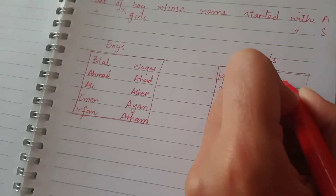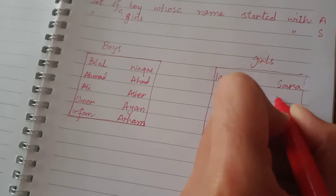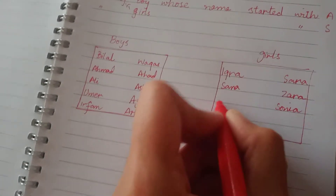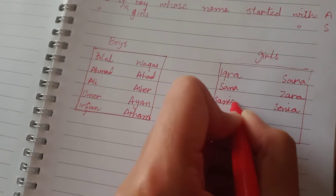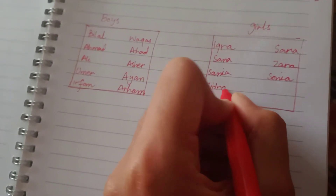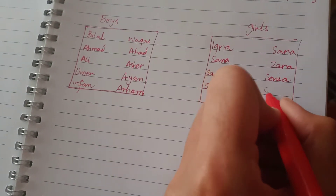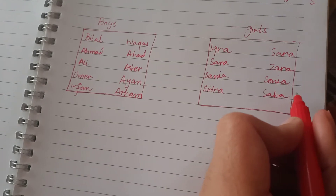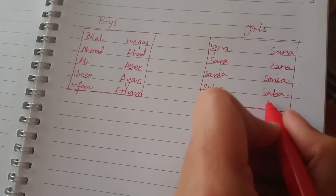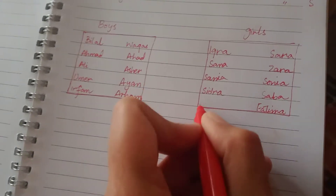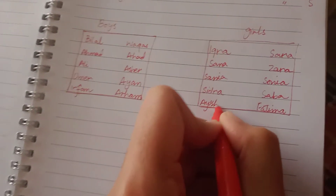Now the girls' names: Sana, Sara, Zara, Sonia, Sidra, Sabah, Fatima, and Aisha.